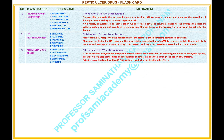Number 3. Name of the classification: Anticholinergic drugs. Drugs under this classification: 1. Pirenzepine, 2. Propantheline, 3. Oxyphenonium, 4. Dicyclomine. Mechanism: it is a selective M1 anticholinergic. Detailed mechanism: the muscarinic acetylcholine receptor mediates various cellular responses, including inhibition of adenylate cyclase, breakdown of phosphoinositides, and modulation of potassium channels through the action of G proteins. Gastric secretion is reduced by 40 to 50 percent without producing intolerable side effects.